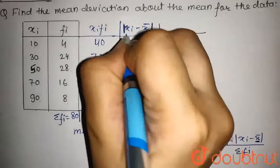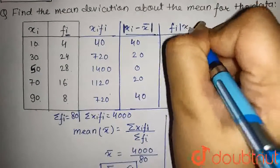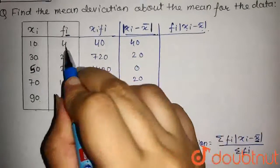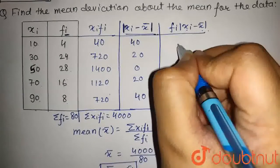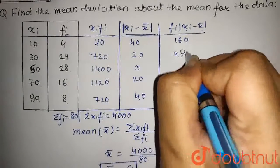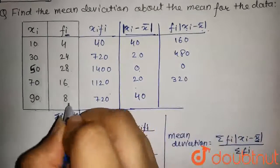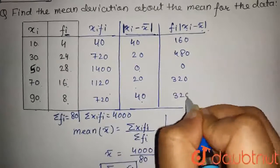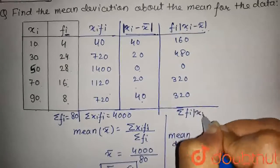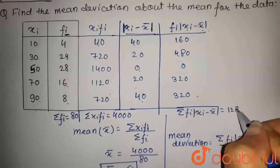Now we will multiply each |xᵢ - x̄| term by the frequency fᵢ. So fᵢ × |xᵢ - x̄| gives: 4 into 40 is 160, 24 into 20 is 480, 28 into 0 is 0, 16 into 20 is 320, and 8 into 40 is 320. The summation of fᵢ|xᵢ - x̄| for all these terms is 1280.